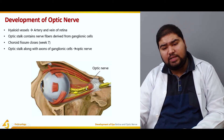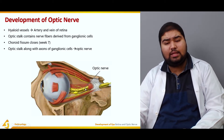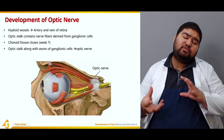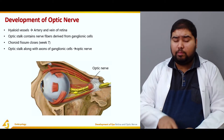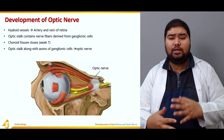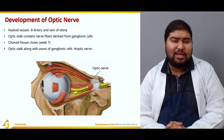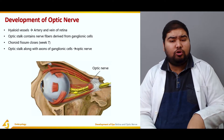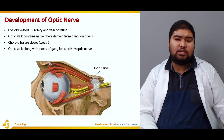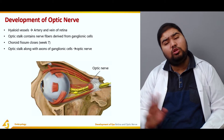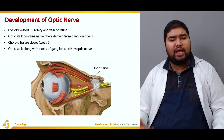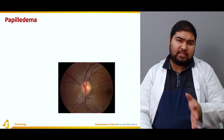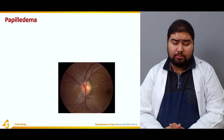Here in the figure you can see the optic nerve in yellow — the thick tube-like structure. The optic nerve is formed by the optic stalk, which contains neural elements from the ganglionic cells. When closure of the choroid fissure takes place at about 7 weeks, the optic stalk is converted to the optic nerve with axons from the ganglionic cells.